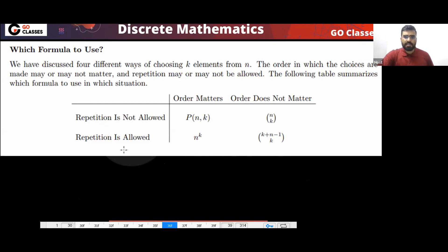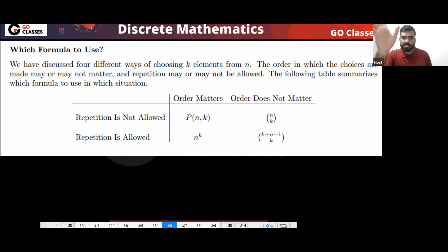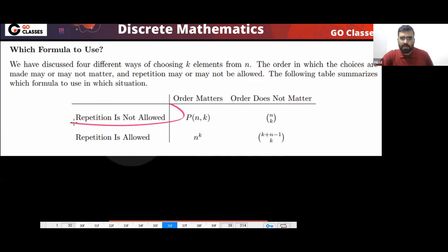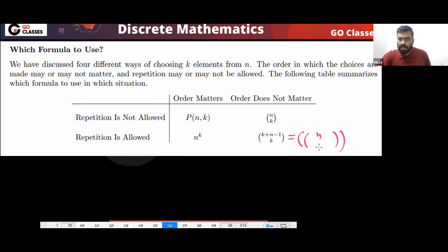We have seen four cases: combination with repetition, permutation with repetition, combination without repetition (NCK), and permutation without repetition (NPK). Order matters means permutation; order doesn't matter means combination.